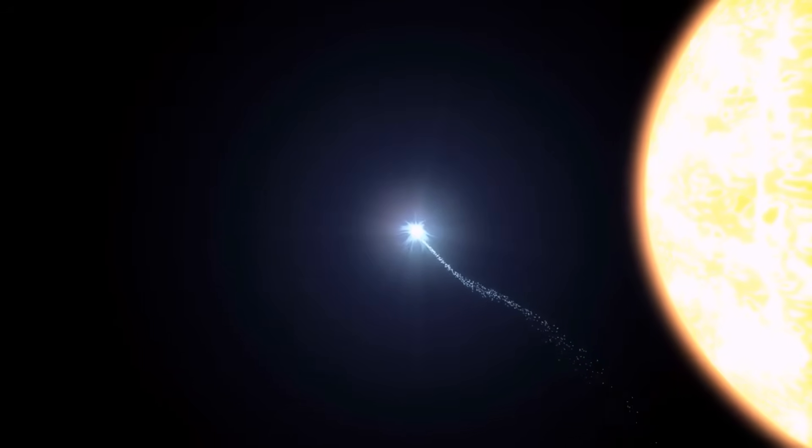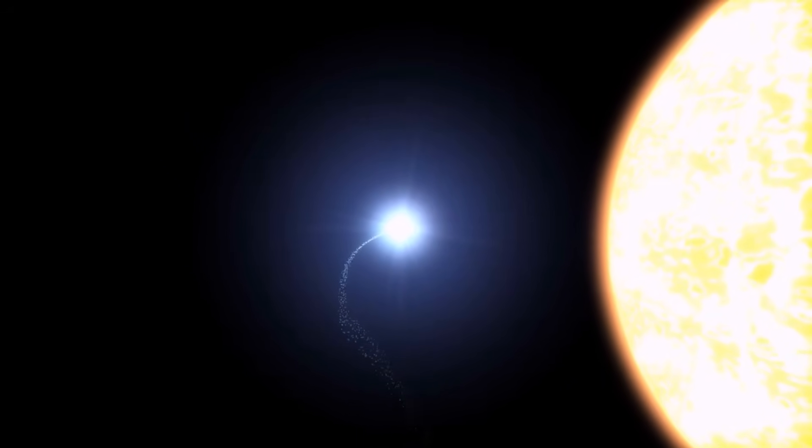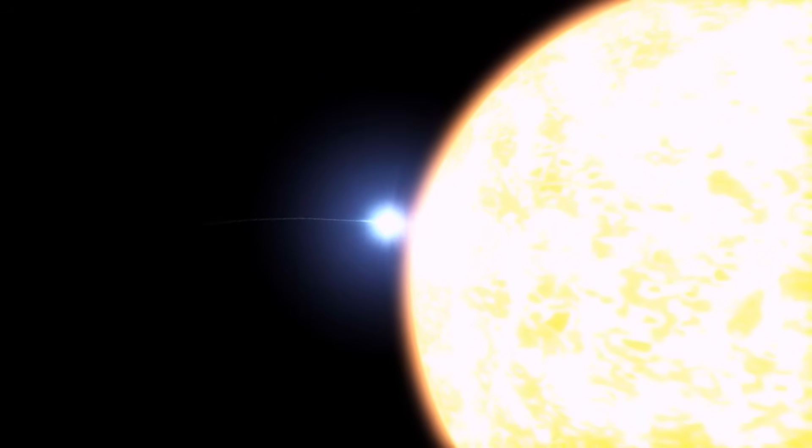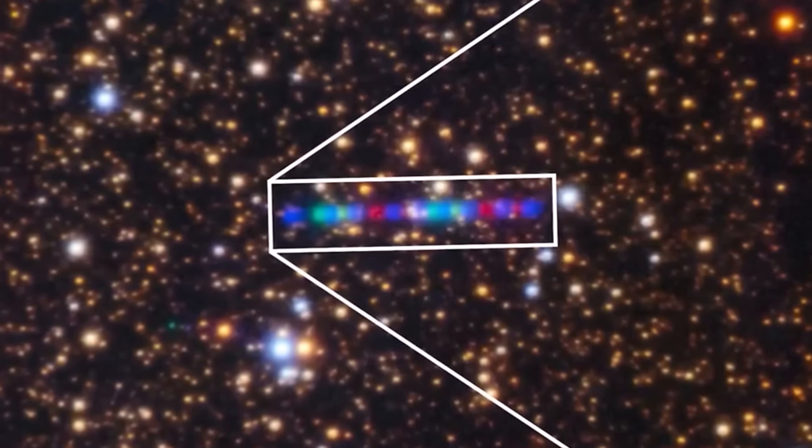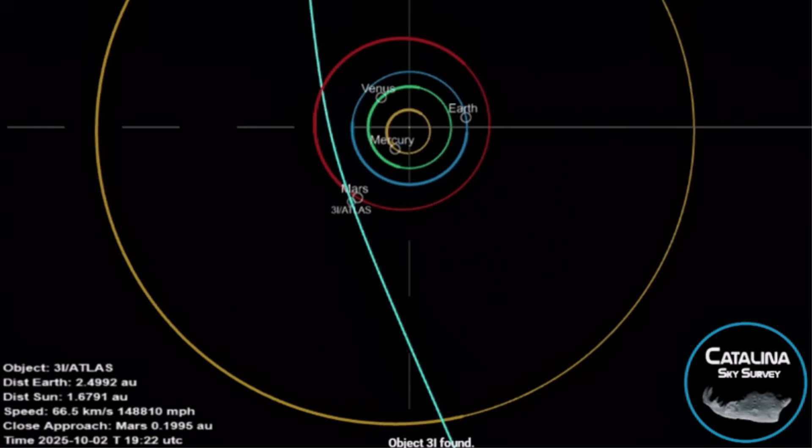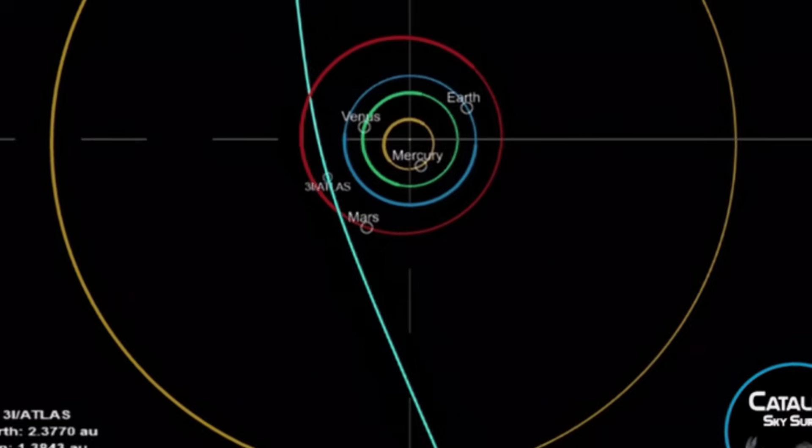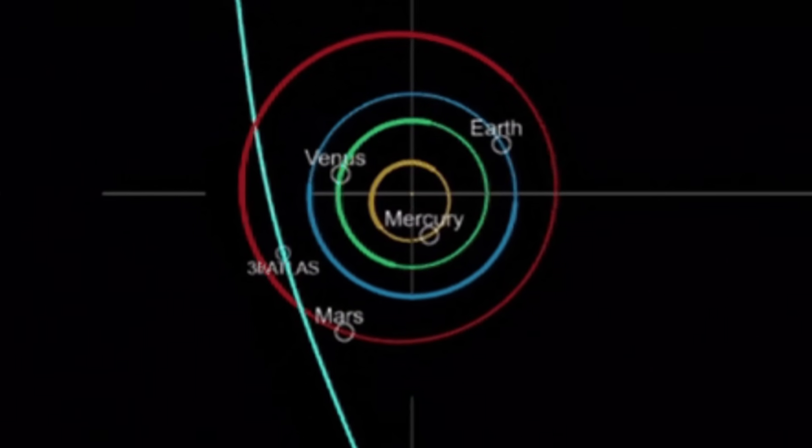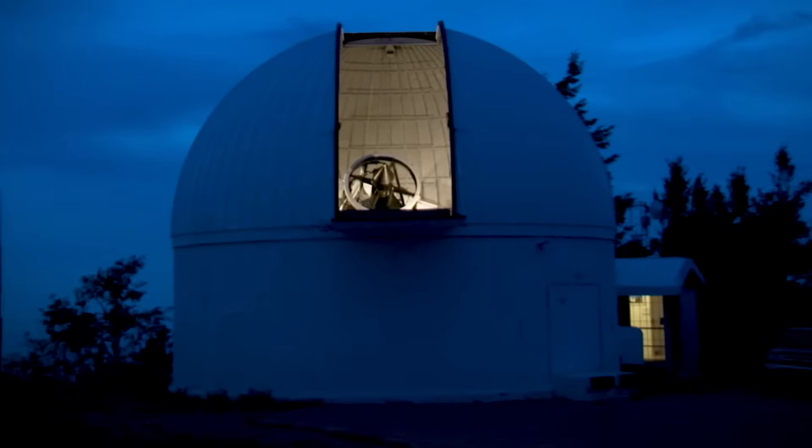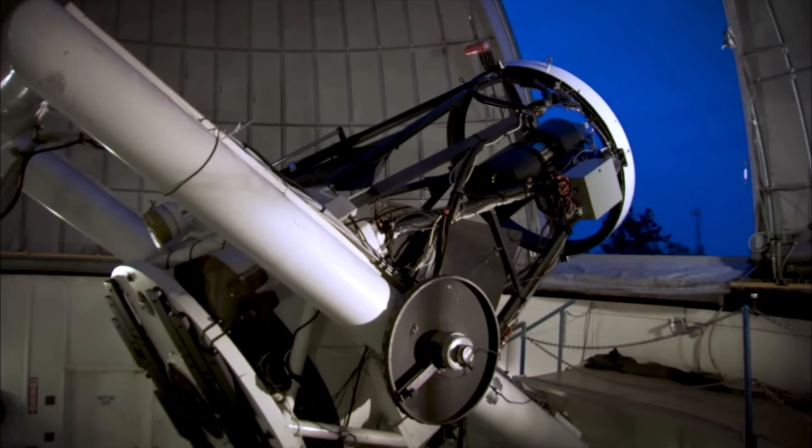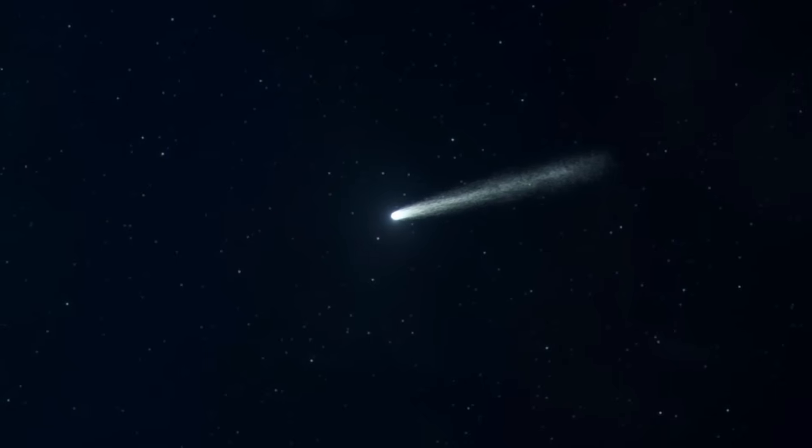To answer that, we have to look back at the first time we met one. For all of human history, we believe we were alone, not just alone in the universe, but that our solar system was an isolated island. Everything orbiting our sun was born here, part of the same family of planets, moons and asteroids. That all changed in 2017. For the first time, we spotted an outsider, an object moving too fast, on a trajectory that could not have originated here. It came from the dark space between the stars. We named it Oumuamua, the first interstellar visitor.